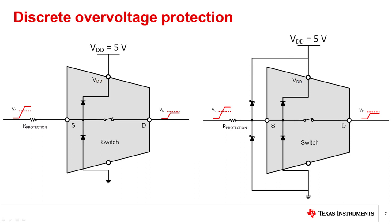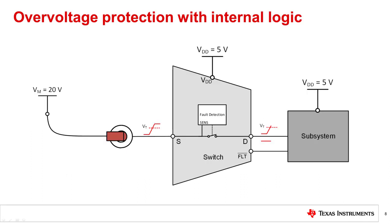Let's turn to solutions with integrated overvoltage protection. Using the same example as before, a 20-volt signal is connected to the switch. The switch's internal sensing detects this overvoltage event. As a result, the switch enters the high impedance state, preventing the signal from passing through the switch. In addition, a fault flag can be raised to inform the system that an overvoltage event has occurred.